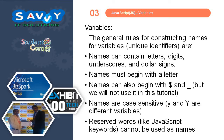The general rules for constructing variable names — unique identifiers: names can contain letters, digits, underscore, and dollar sign. Names must begin with a letter. Names can also begin with a dollar sign or underscore, but we will not use those in this tutorial. Names are case sensitive — Y and y are different variables. Reserved words like JavaScript keywords cannot be used as names.